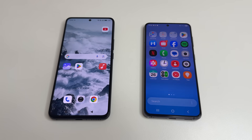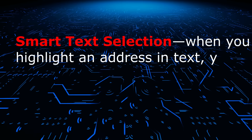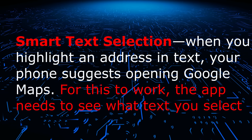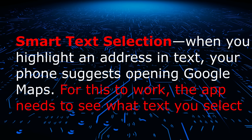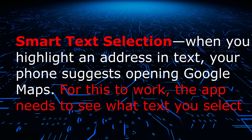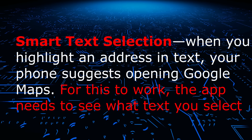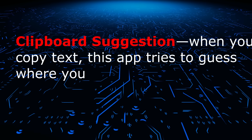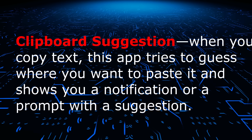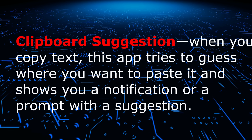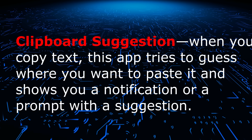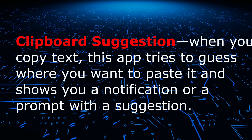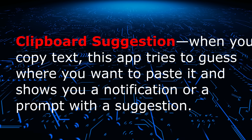Here's a quick list of them. Smart text selection: when you highlight an address in text, your phone suggests opening Google Maps. For this to work, the app needs to see what you select. Clipboard suggestion: when you copy text, this app tries to guess where you want to paste it and shows you a notification or a prompt with a suggestion.